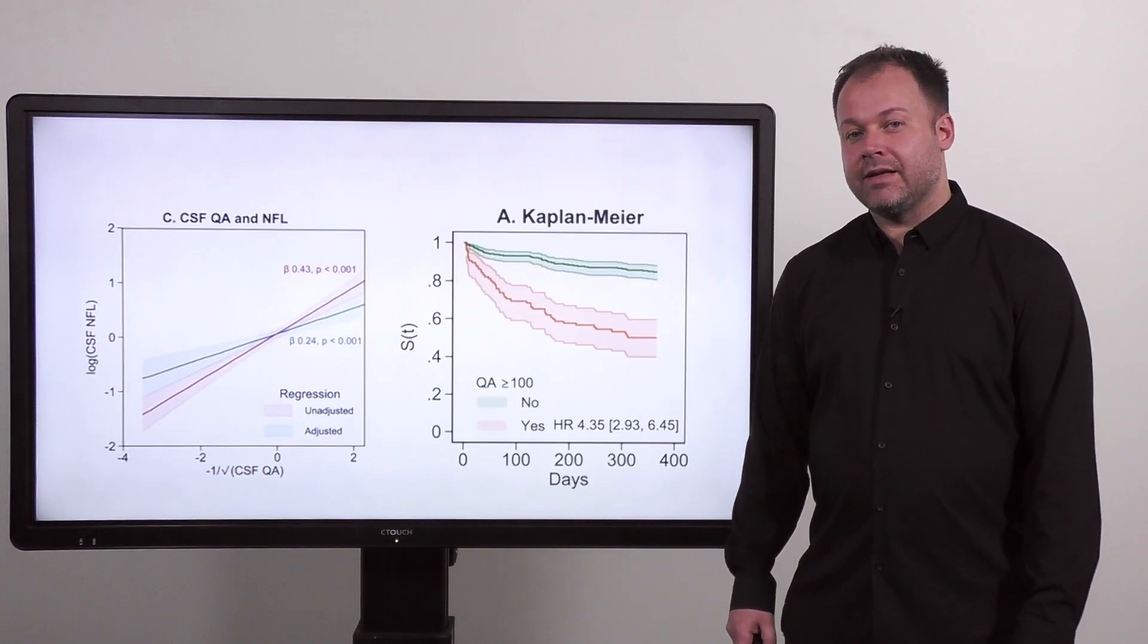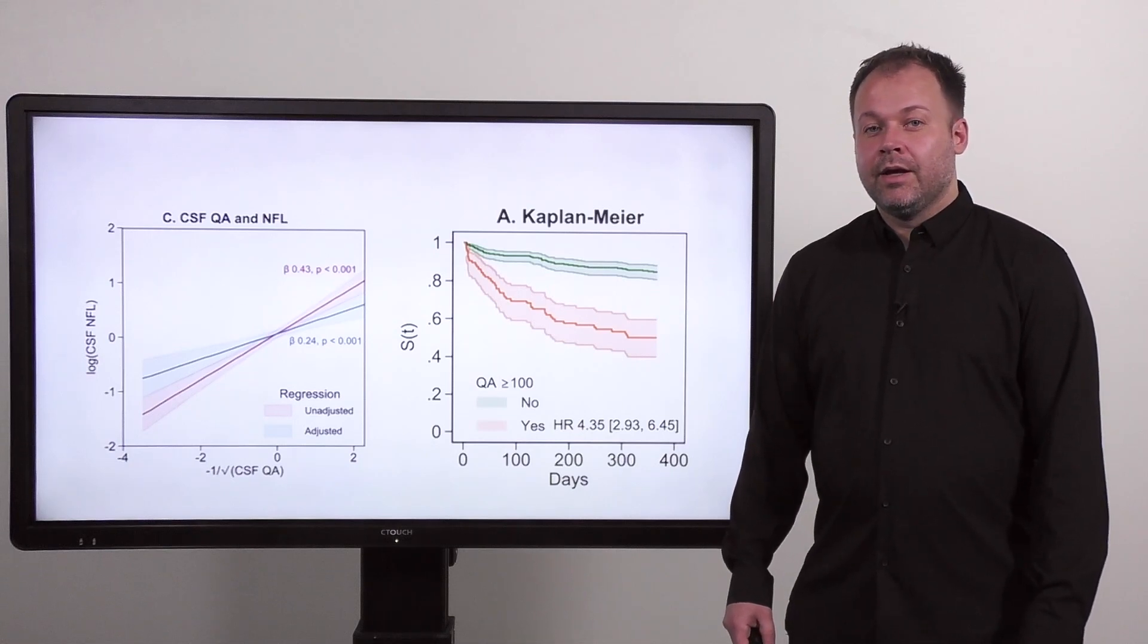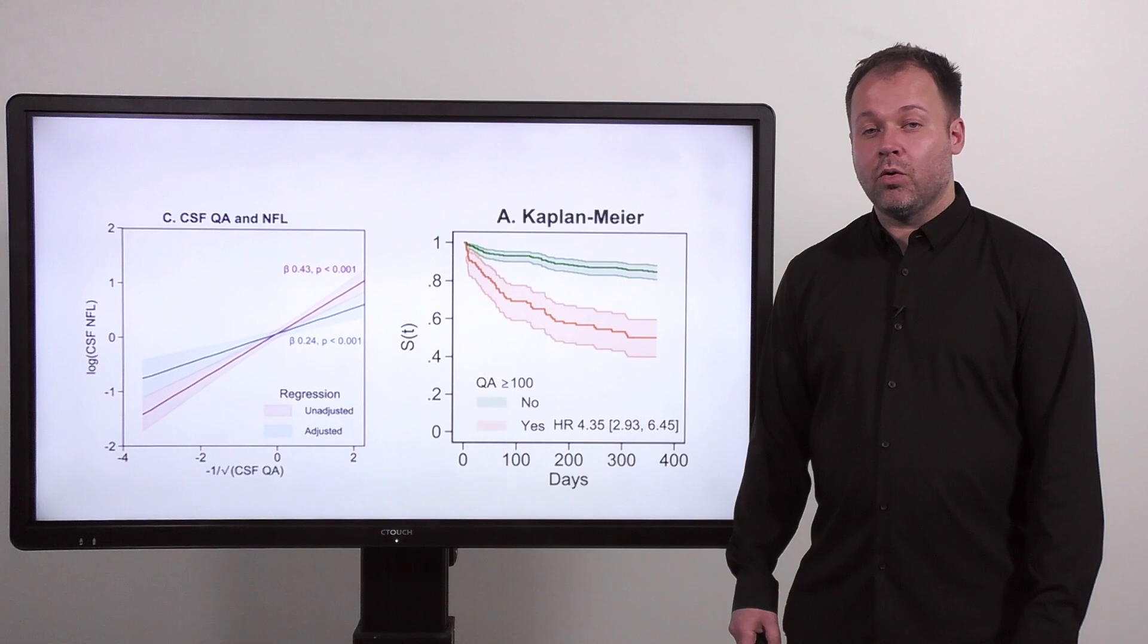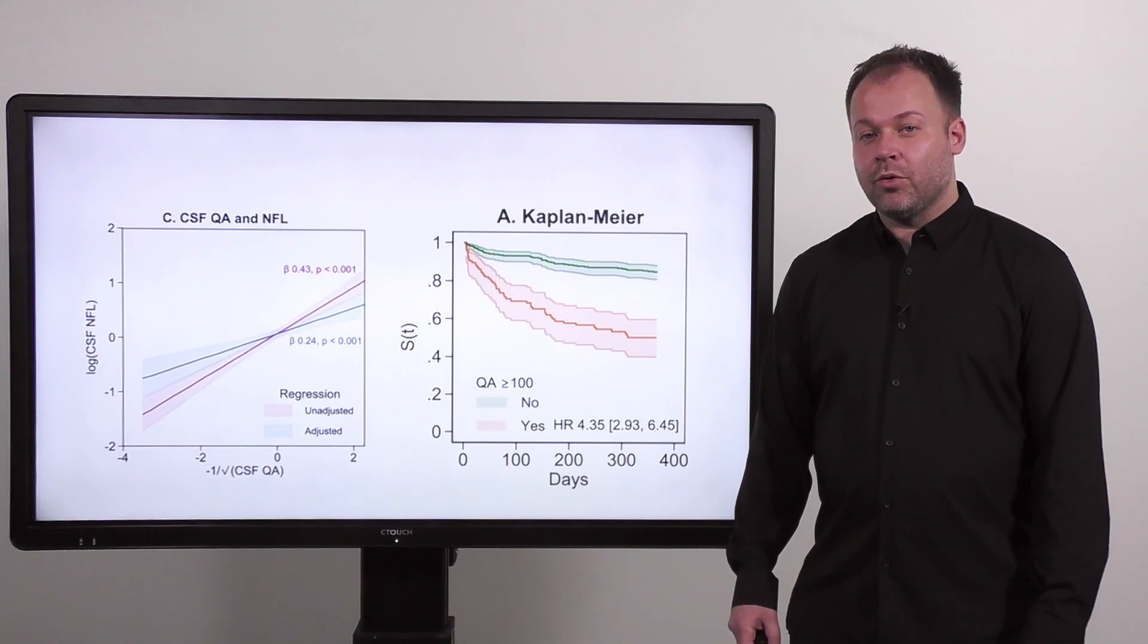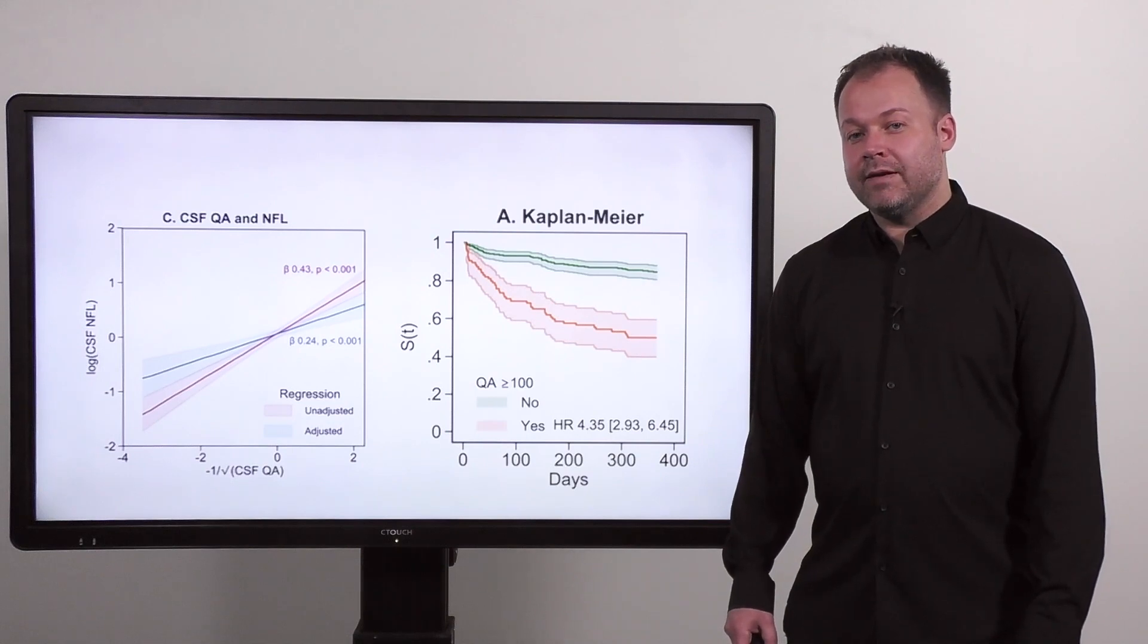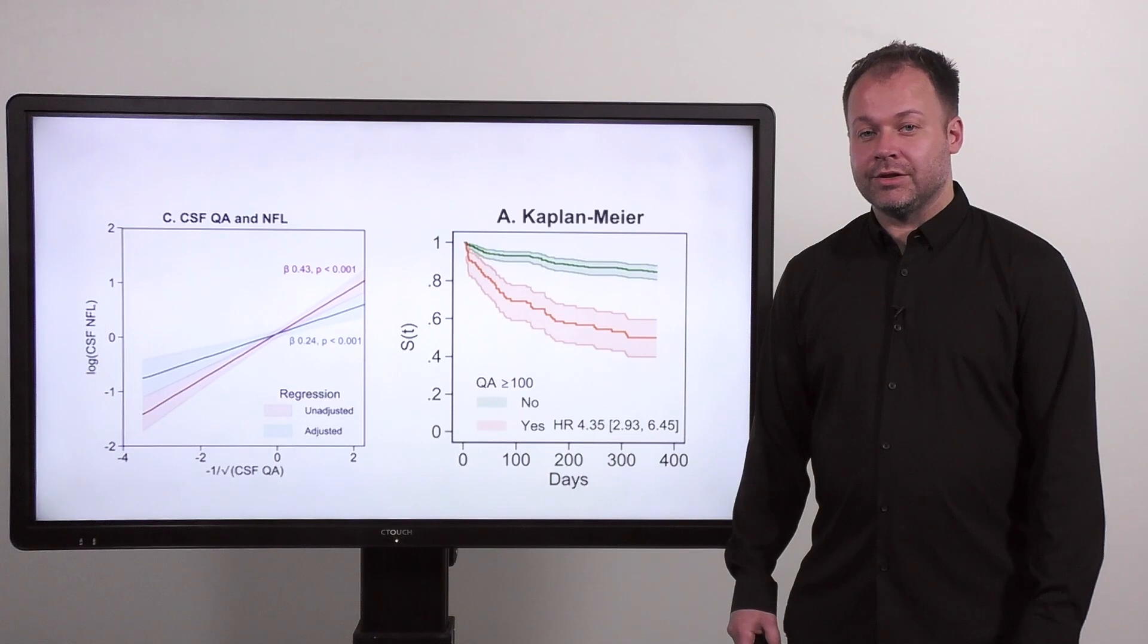We also investigated whether the kynurenines were associated with any negative outcomes. We measured neurofilament light chain, a biomarker of neuronal injury, and among all the serum and CSF kynurenines measured, CSF quinolinic acid had the strongest association with neurofilament light chain, and this remained in adjusted analysis. Furthermore, it also had the strongest prediction of mortality after one year, where there were 99 events in 450 hip fracture patients over one year, and quinolinic acid remained significant in adjusted analysis.